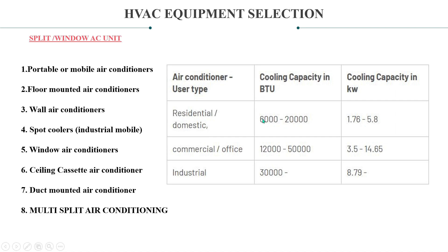Cooling capacity in BTU — 12,000 BTU per hour is equivalent to 1 ton of refrigeration. For residential and domestic applications, we mostly use 6,000 to 20,000 BTUs. For commercial and office applications, we use 12,000 to 50,000 BTUs. For industrial applications, 30,000 BTUs is a starting point. These are the equivalent values in kilowatts.